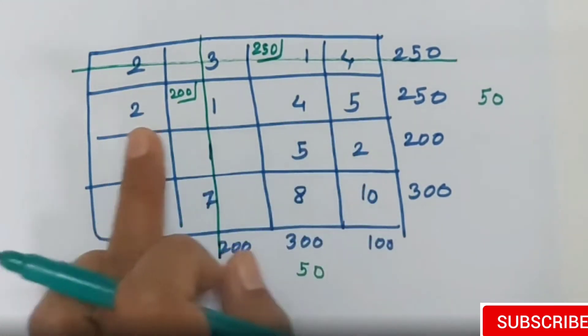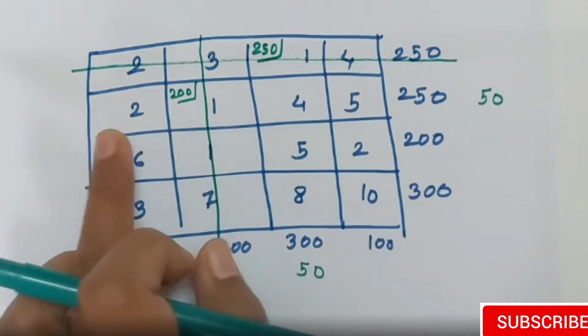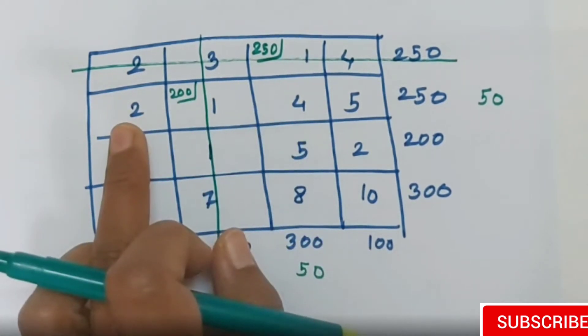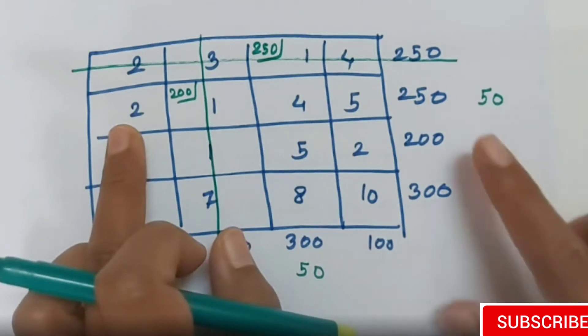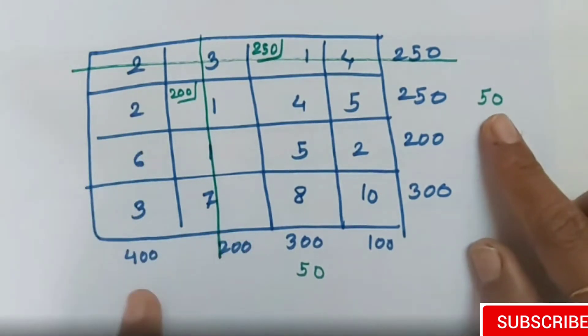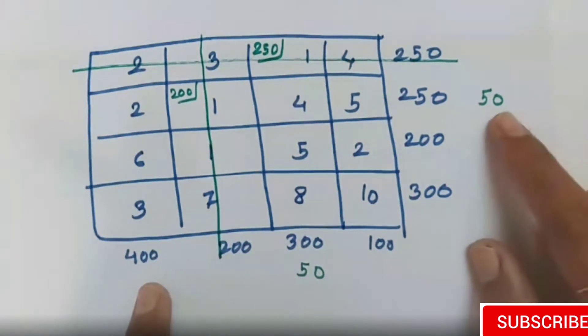In the second row, check which is the next minimum value. The next minimum value is 2 to corresponding assign, either 50 or 400, so minimum is 50.